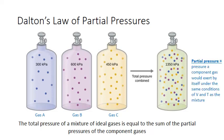Partial pressure is defined as the pressure a component gas would exert by itself under the same conditions of volume and temperature as the mixture. So let's imagine a mixture of gases A, B, and C. The different gas molecules are represented by different colors here. In the mixture, each of those gas particles contribute to the pressure inside the container.